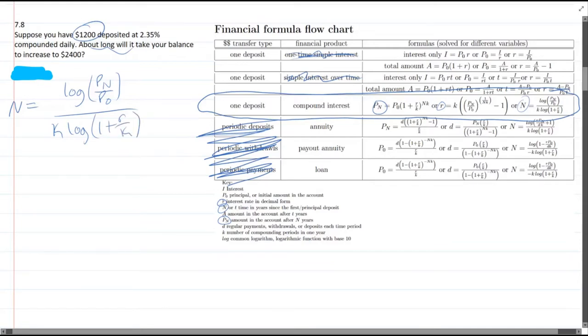We just have to put the values into the right variable. P_n is the final amount after n years—we don't know n, but the final amount we do know is twenty-four hundred. P_0 is the initial amount, twelve hundred. It just so happens this question asks what we want to wait till it doubles in value.